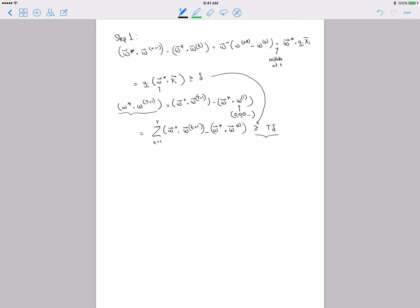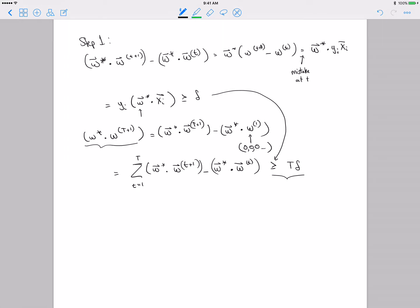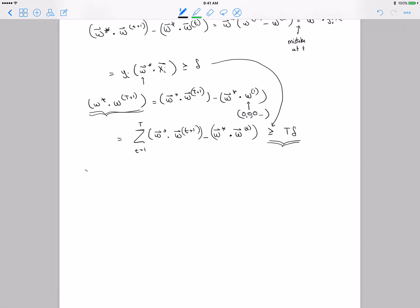Now I'm trying to show that the cosine of W* and Wt+1 is large. I've managed to show that this inner product is large, but I need to show that the norm of Wt+1 is not too big. That's the second step.